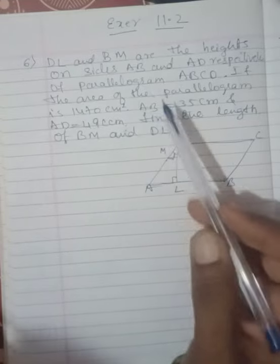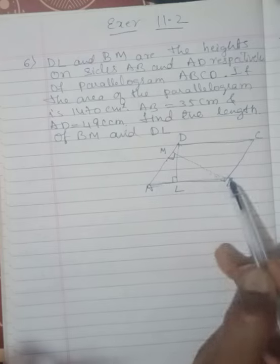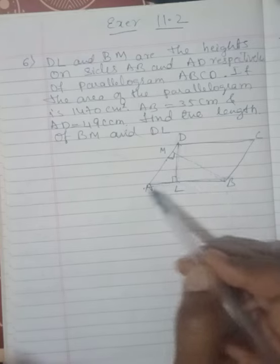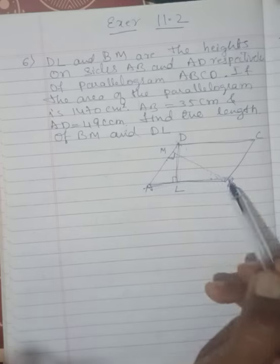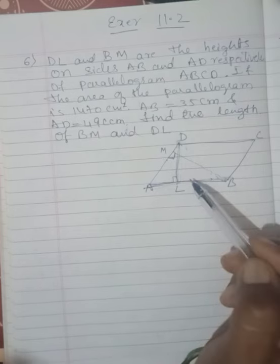See, this question is: DL and BM are heights on sides AB and AD respectively. So this is the base and this is the height of this base. When you go with respect to base and height of parallelogram, as I explained in the previous question also, based on the bases we have different heights in parallelogram.